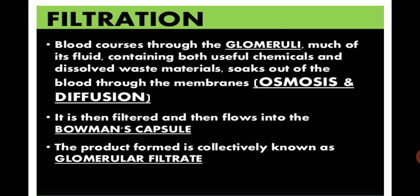Recall that the Bowman's capsule is a cup-shaped structure around the glomerulus. The glomerulus is the network of capillaries carrying blood for filtration — impure blood containing waste products. It is filtered through the Bowman's capsule so that waste materials can be removed. The product formed is collectively known as the glomerular filtrate.